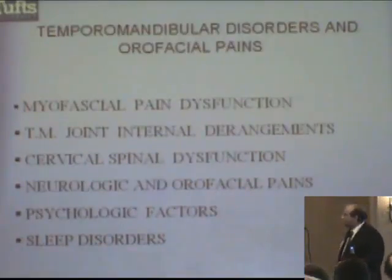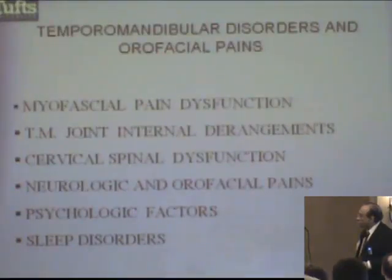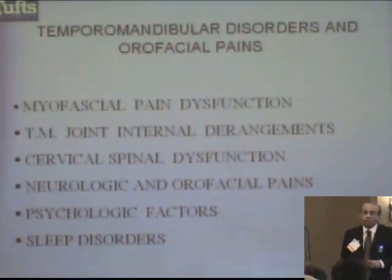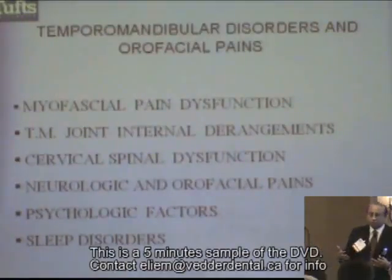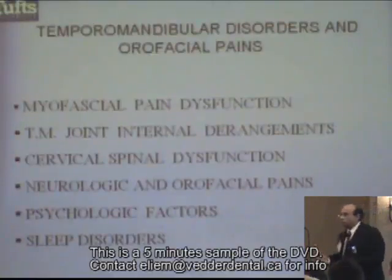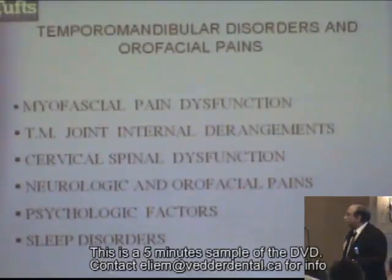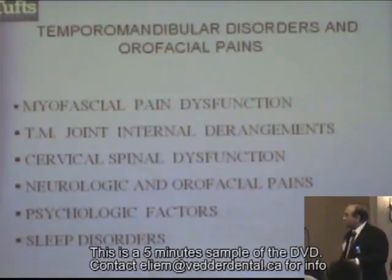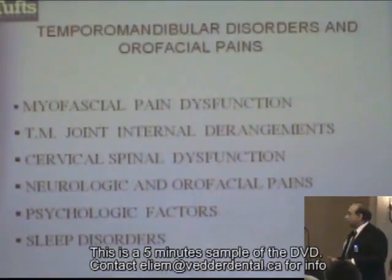What areas do we look for? In myofascial pain dysfunction, TM joint internal derangement, and cervical spinal dysfunction — these are what I consider peripheral problems. They're musculoskeletal problems, and musculoskeletal problems lend themselves well to physical treatments. The neurologic and orofacial pains and psychological features are much more of a central nervous system disorder type problem, and therefore lend themselves more to medications and counseling.